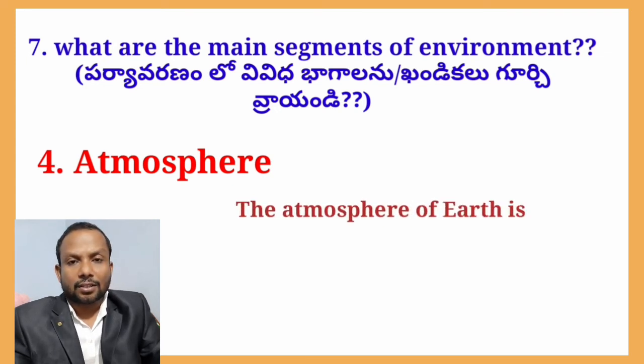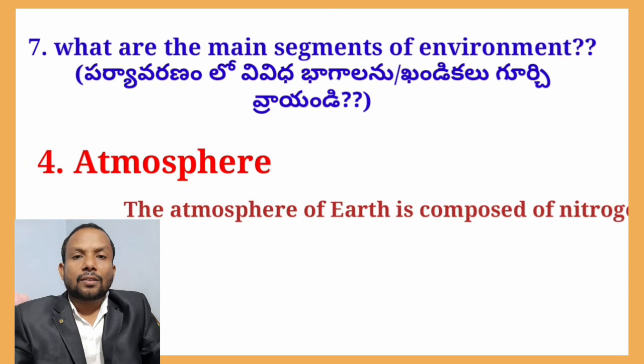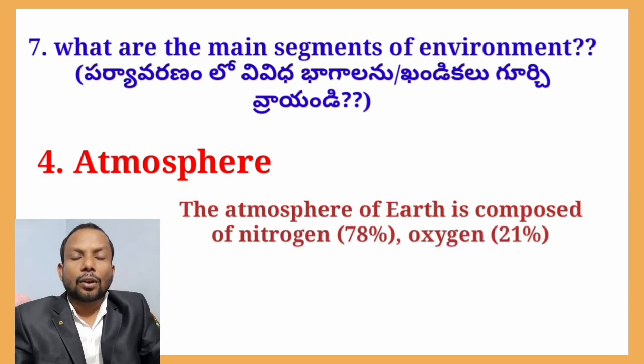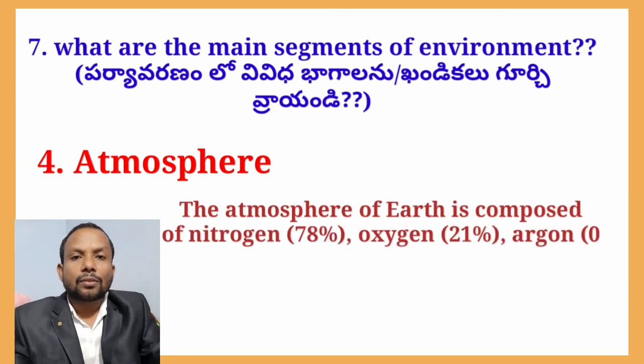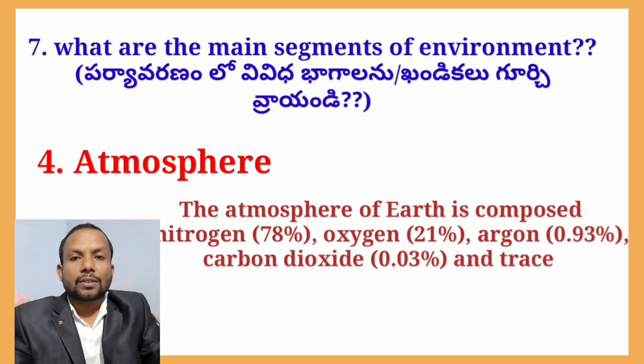The atmosphere is composed of approximately 78% nitrogen and 21% oxygen. These two gases together make up nearly 99% of the atmosphere's composition, with the remaining 1% consisting of other gases such as argon, CO₂, and trace elements.